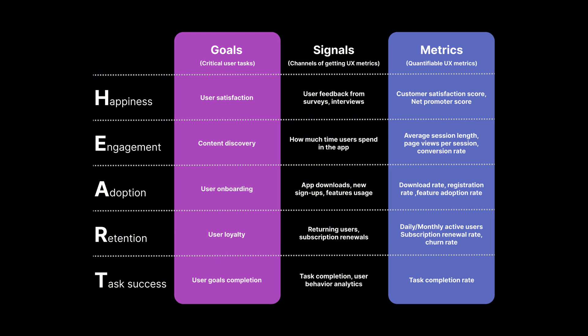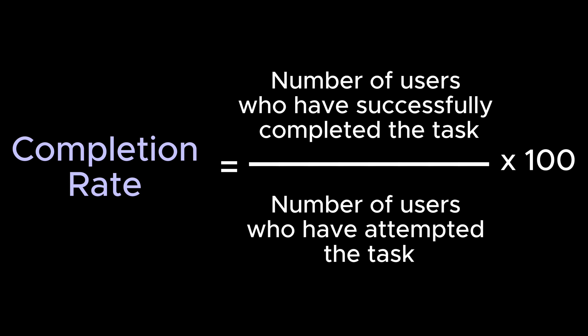Task Success evaluates how effectively users can complete tasks. Goal: users achieve their goals quickly and easily. Signals: users can easily find and view content as well as complete tasks. Metrics: Task Completion Rate and Task Completion Time. Task Completion Rate is the percentage of users who successfully completed a particular task in a product — the higher the rate, the better the user experience.